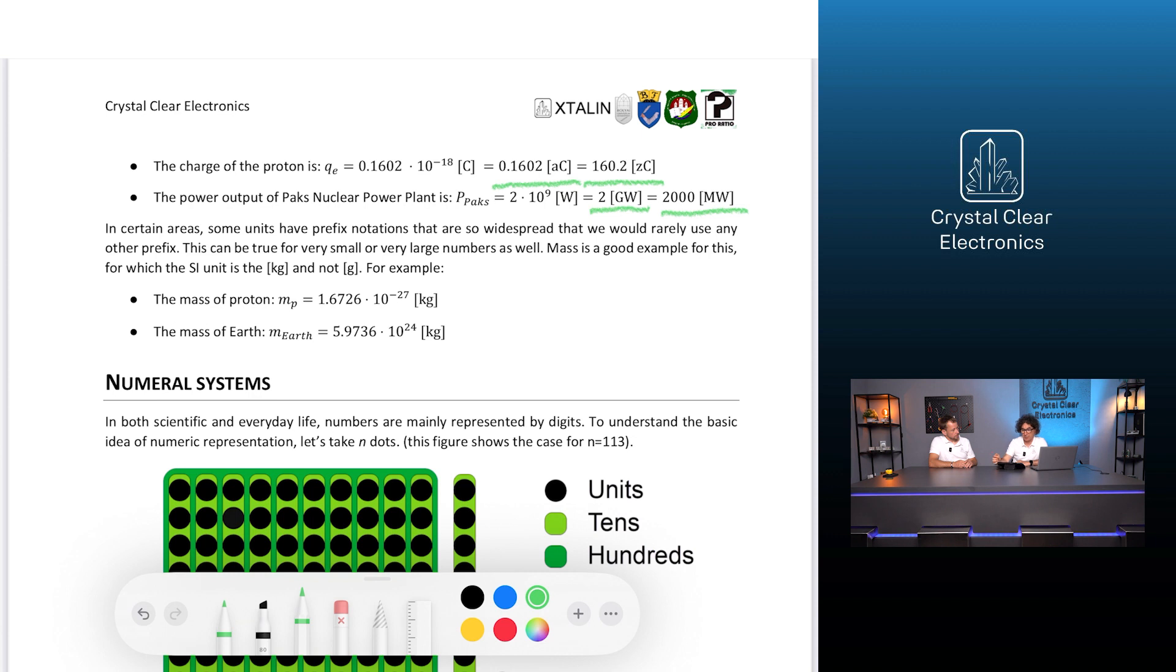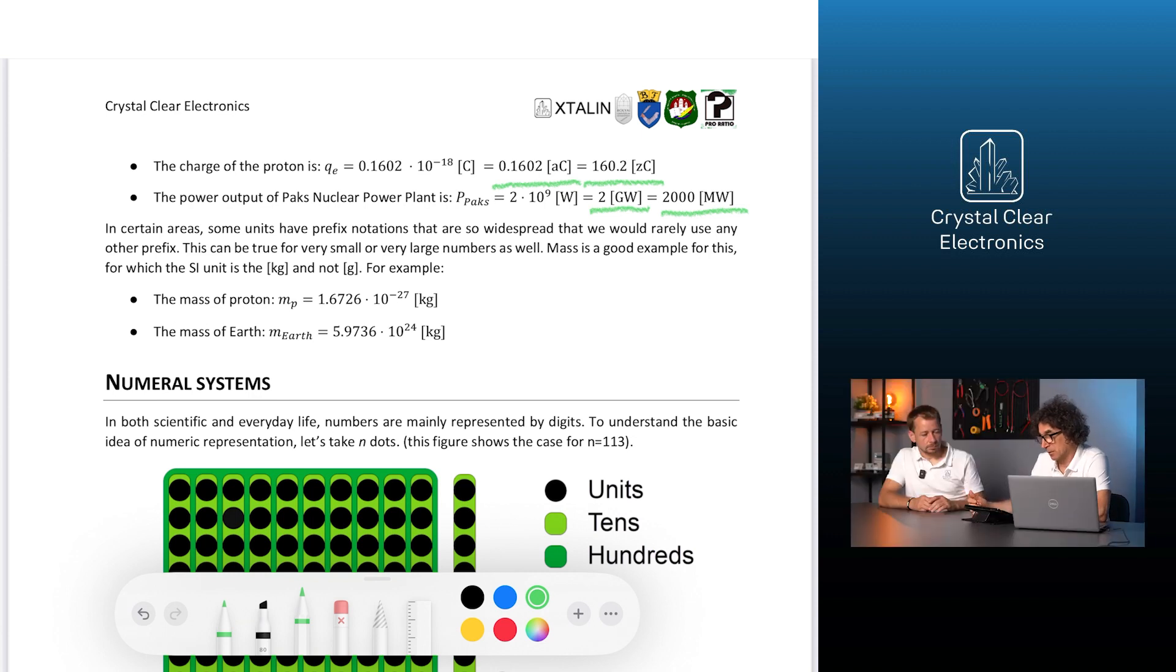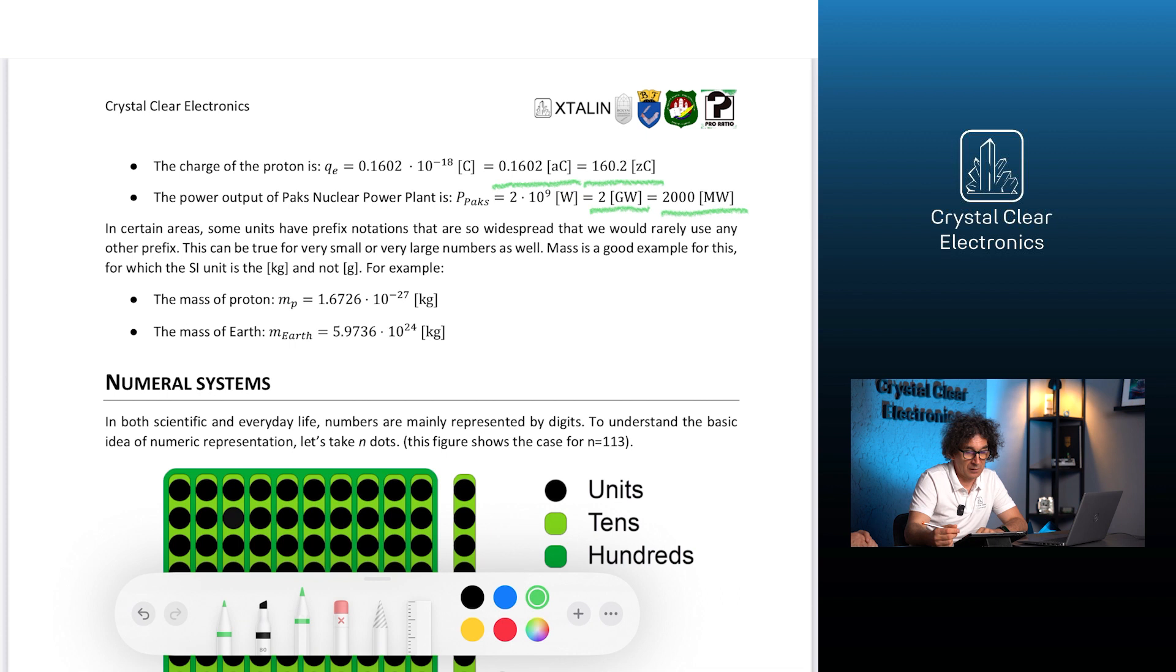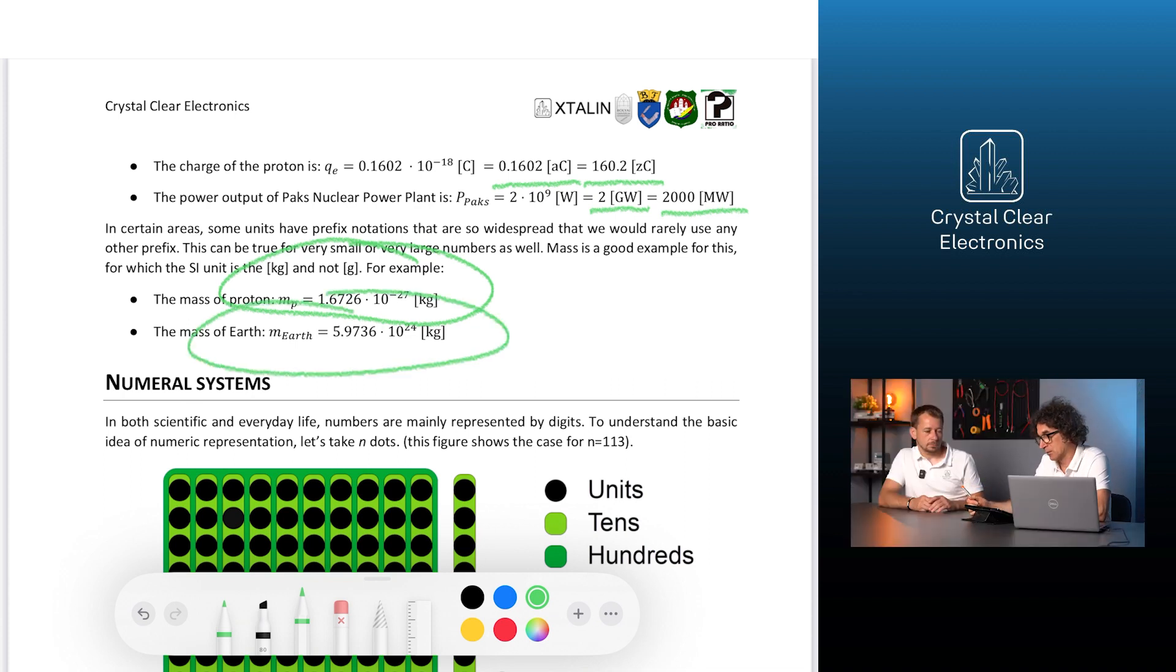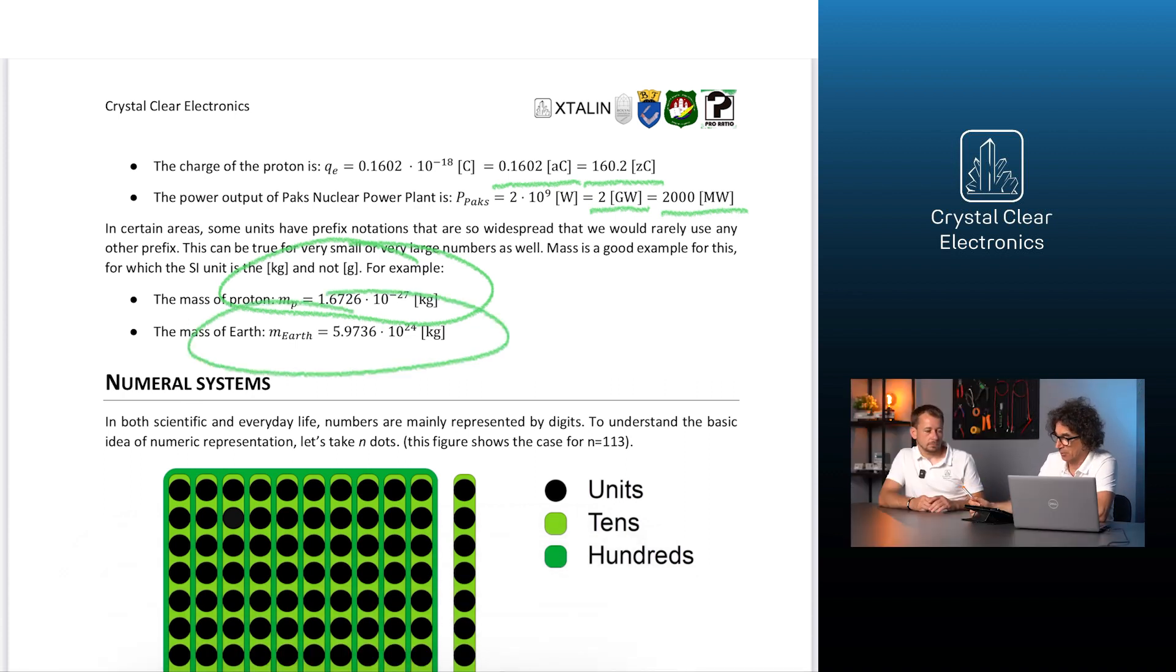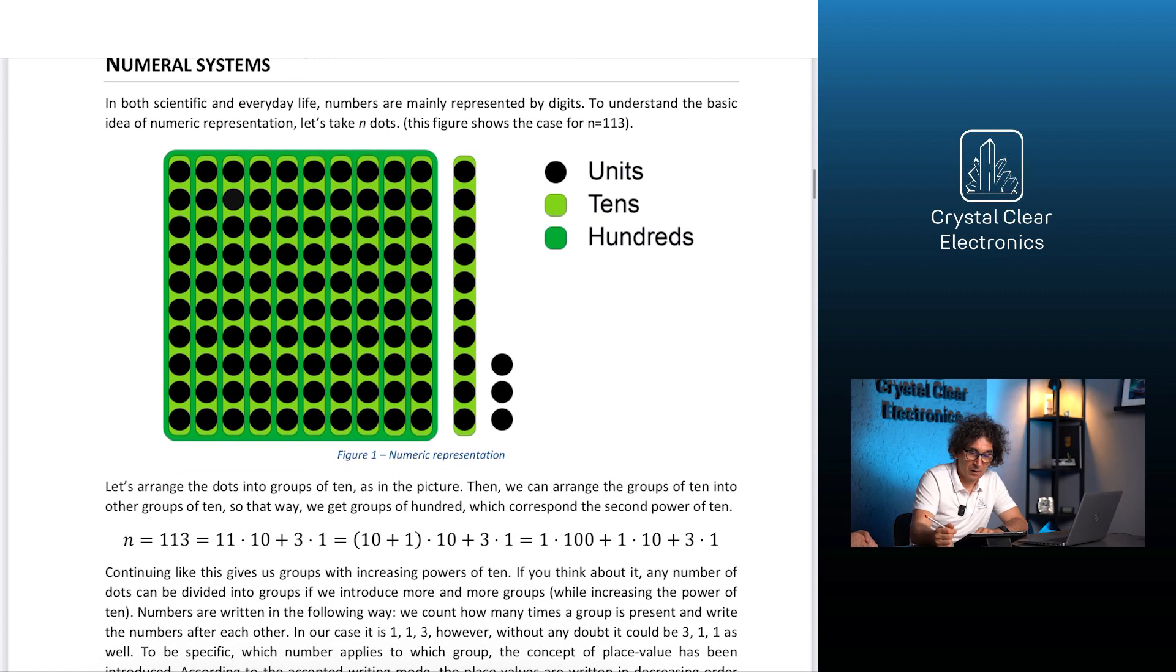In certain areas, some units have prefix notations that are so widespread that we would rarely use any other prefix. This can be true for very small or very large numbers as well. Mass is a good example for this, for which the SI unit is the kilogram and not grams. For example, mass of a proton M sub P equals 1.67 times 10 to the negative 27th kilograms, and the mass of Earth M sub Earth equals 5.97 times 10 to the 24th kilograms.